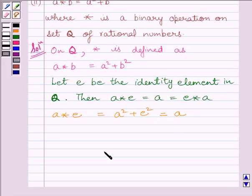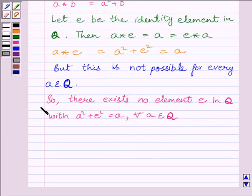But this can't be possible for every a belonging to Q. So we can write: there exists no element e in Q with a square plus e square equals a for every a belonging to Q, where Q is the set of all rational numbers.